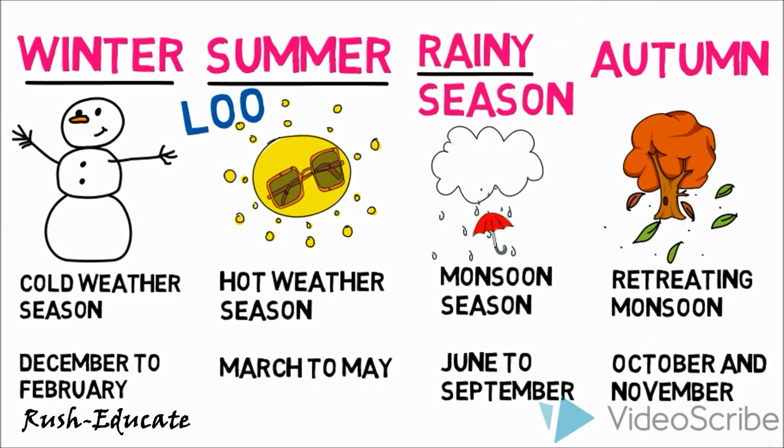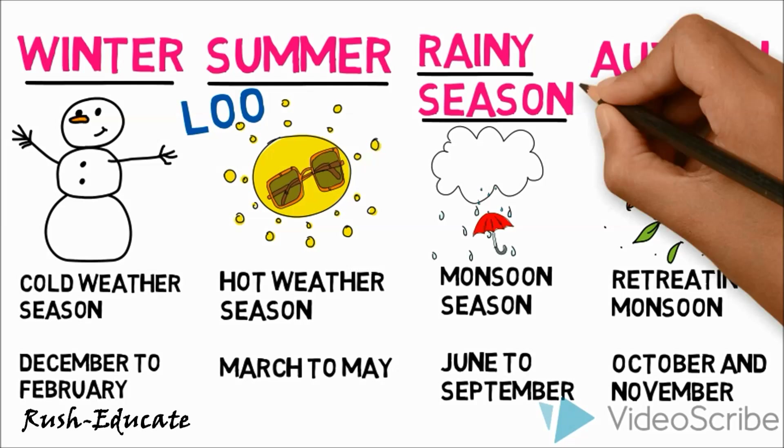Southwest monsoon season, or rainy season: this season is marked by the onset and advance of monsoon. The winds blow from the Arabian Sea and Bay of Bengal towards the land. They carry moisture with them. When these winds strike the mountain barriers, rainfall occurs.